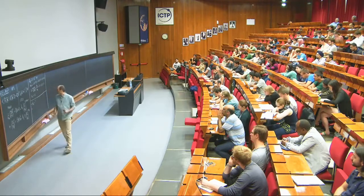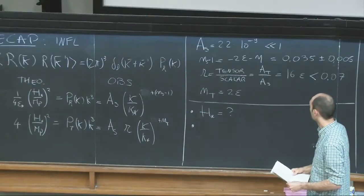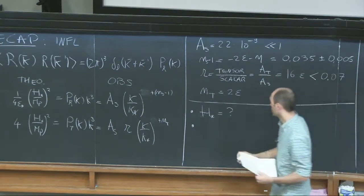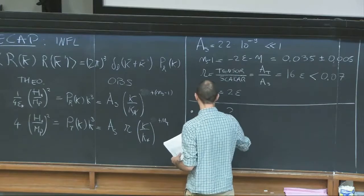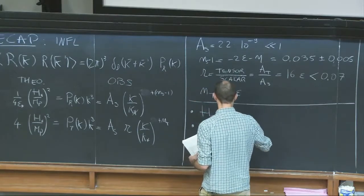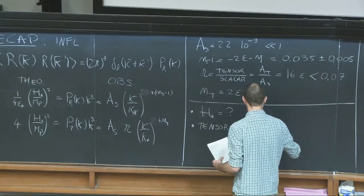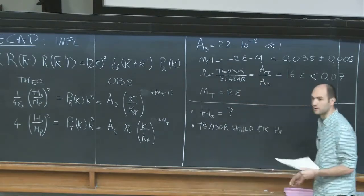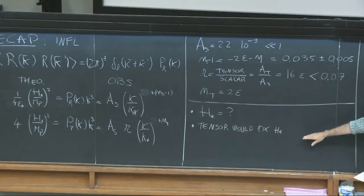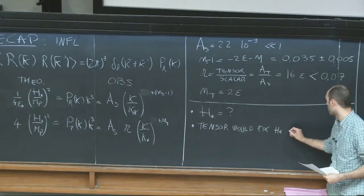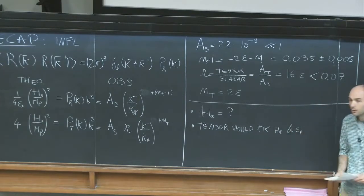If we measure the tensors, we finally measure epsilon and then fix the scale of inflation. So measuring tensors would fix H. That's one of the reasons why people are really trying to measure tensor modes — it would tell you that inflation took place at a specific scale, because it would measure epsilon and therefore fix Hubble.